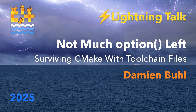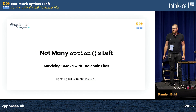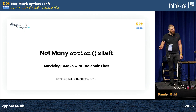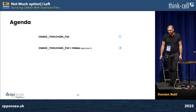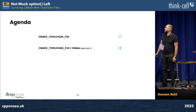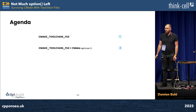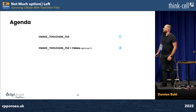I have a lot of pressure with the very good talks that were before me, so I'm speaking about CMake — not many options left — surviving in a world of toolchain files and options. The thing I would like to basically show is that it's not a good idea to mix toolchain files and options, but if you do, I'll give you some knowledge to handle this.